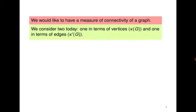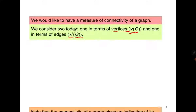To proceed further, we need to measure connectivity on the basis of two parameters. One is vertex connectivity, which we denote by κ(g), where g is the graph. The other is edge connectivity, denoted as κ'(g). To introduce the concept of edge connectivity, we will first start with edge cuts.